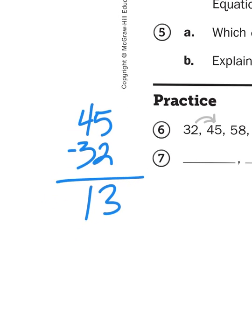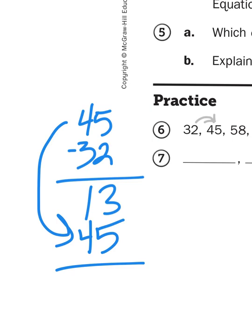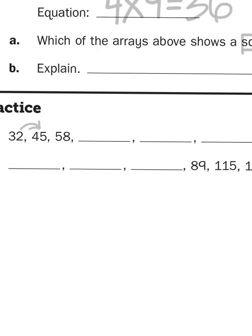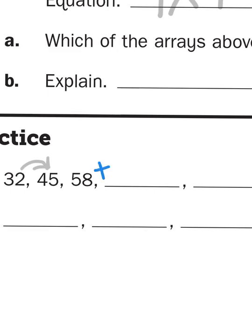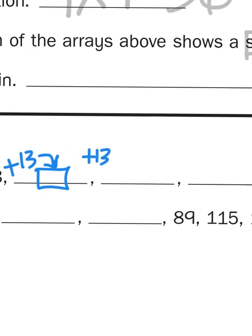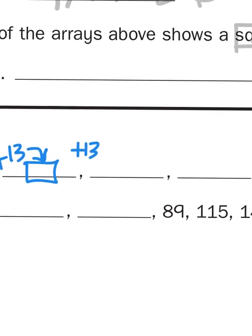Now, just to double check to make sure that that is the pattern, I would then take 45 and add 13 more to it to see if we get our next number in the pattern 58. When I add 3 plus 5 together, that gives me 8. And of course, 10 plus 40 is 50. So that works. So my pattern, or my rule, is to add 13. So what you would do is then add 13 to 58. And then that would be your fourth number. And then you're going to add 13 more to this sum. And that will give you the fifth number and so on and so forth.